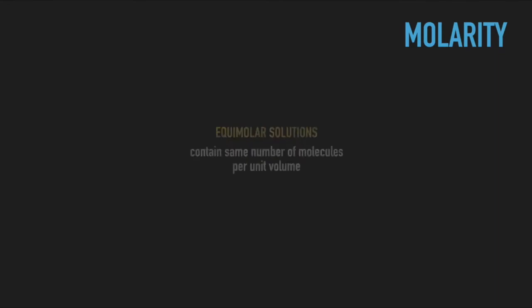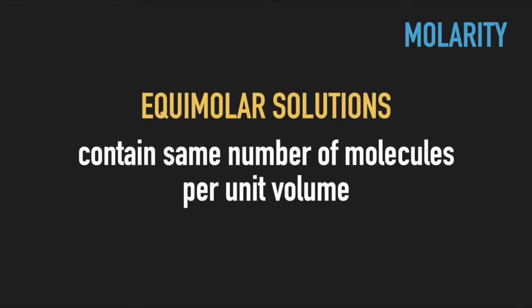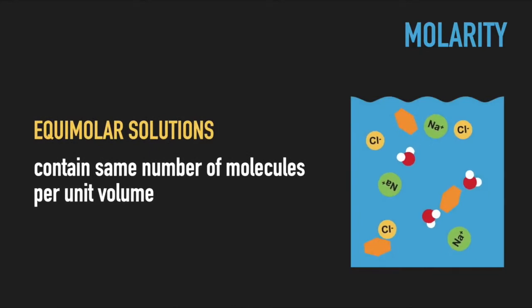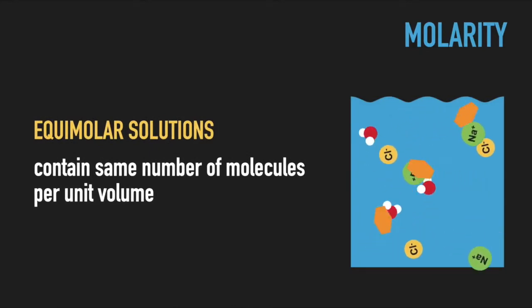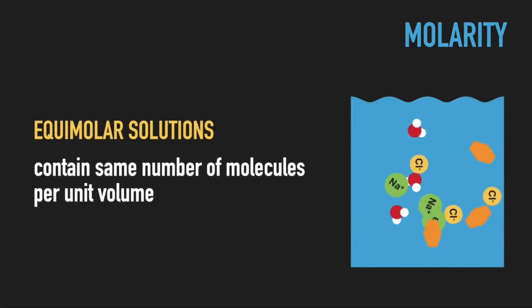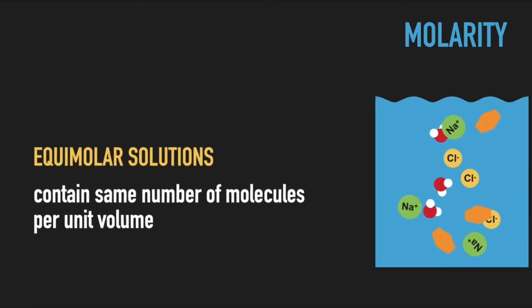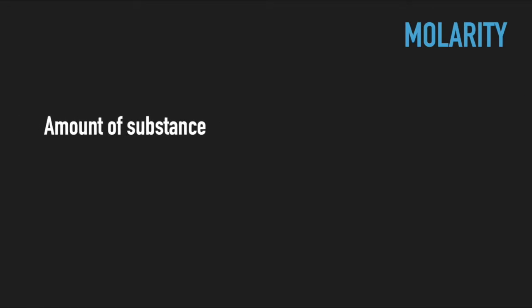Therefore, equimolar solutions — that is, solutions with equal molar concentration of reagents — have the same number of molecules per unit volume. For example, 10 micromolar tris, 10 micromolar salt, and 10 micromolar glucose solutions have equal numbers of tris, sodium, chloride, and glucose molecules in one liter or in one milliliter. As chemical and enzymatic reactions follow exact stoichiometry, molarity is a natural way of expressing the concentration of reagents.